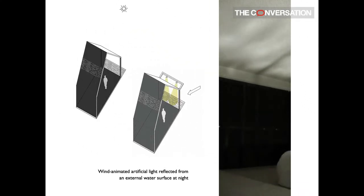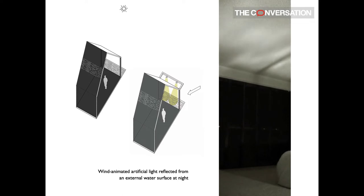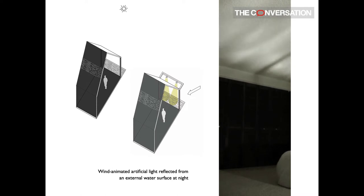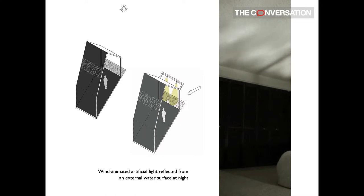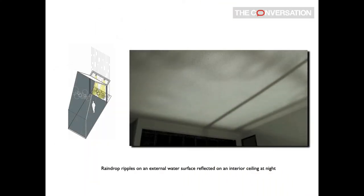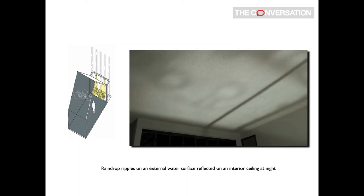Placing a shallow tray of water on a sun-facing balcony or deck can project wind-animated water reflections either directly onto interior surfaces or onto the back of a translucent shade. Here we see the effect produced at night by directing a security light onto an external water surface. At night, the same external light and tray of water can also project ripples caused by raindrops onto an interior ceiling or shade.